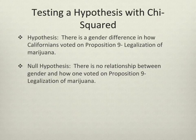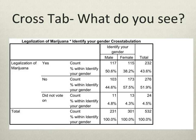Let's use chi-squared in an example. I have a data set from a post-election survey conducted by one of these classes. We collected demographic information and how individuals voted. I'm going to hypothesize that there's a gender difference in how Californians voted on Proposition 9, the legalization of marijuana. The null hypothesis would be that there's no relationship between gender and how one voted on Proposition 9. In this sample, we had so few transgender people that I had to eliminate them from the analysis because we wouldn't have been able to make any assumptions about them based on our data.